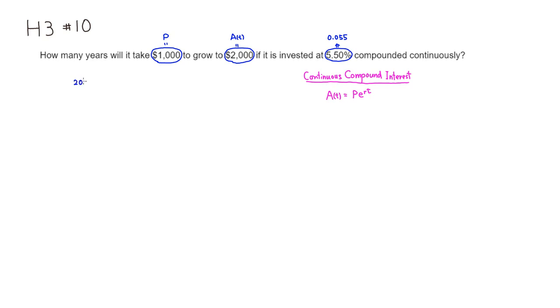Is equal to, initial investment is 1,000. Then we have e to the r is 0.055. And t is the one we are looking for, so t is unknown.